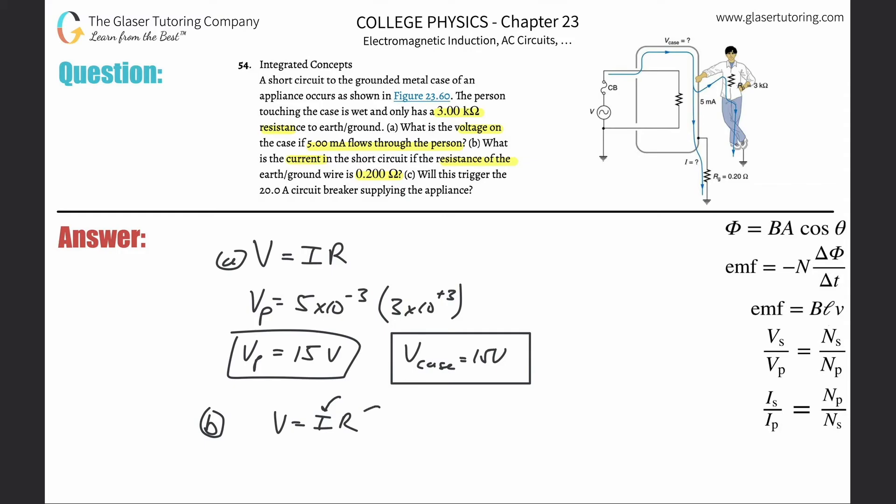So in order to find that current in the short circuit, we have to know the resistance of the short circuit and the voltage of the short circuit. Now remember, since this was all parallel, we know voltage is 15 still. I know this is voltage of the case and it's voltage of the person, but that's the same as the voltage in the short circuit is equal to I then multiplied by the resistance of 0.2.